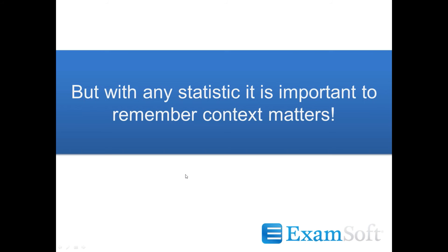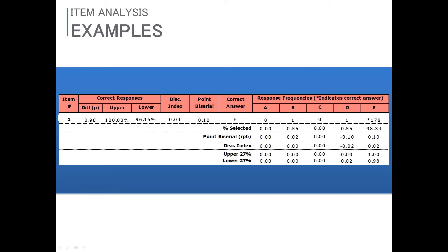Let's look at examples. This first example is a mastery level question. You'll see a discrimination index of 0.04 and a point biserial of 0.1 — both very low, not a good indicator of overall performance and virtually no discrimination. But if your intention with the item is that it's mastery level, that's okay. However, if this was supposed to be a discriminating item — something that really caused people to think — then you need to look at a couple things, because maybe you taught it better than you thought, or maybe students have a copy of your exam somewhere.